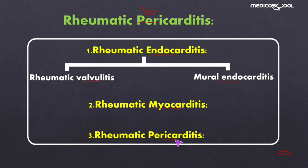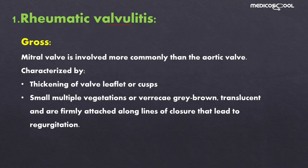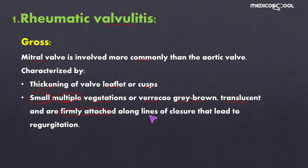Regarding rheumatic valvulitis, grossly the mitral valve is the most commonly involved. It is characterized by thickening of the valve leaflets or cusps. There are small, multiple vegetations — also known as verrucae — which are grey-brown in color, translucent, and firmly attached along the lines of closure, leading to regurgitation. They are small, multiple, grey-brown, translucent, and importantly firmly attached, meaning there are no chances of embolization.